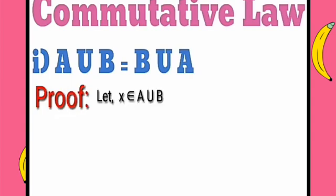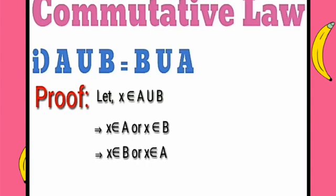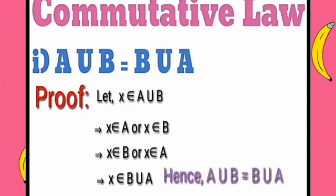Let x belong to A union B. Then we can write x belongs to A or x belongs to B. We can also write it as x belongs to B or x belongs to A. That means x belongs to B union A. Hence A union B is equal to B union A.